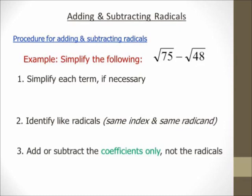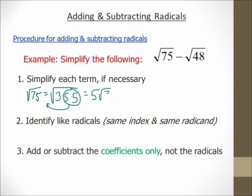I'm going to treat square root of 75 as if it's its own simplifying problem. Square root of 75 is the square root of 3 times 5 times 5. My index is a 2, so I can circle two 5s and bring one out. So I end up with 5 square root of 3.